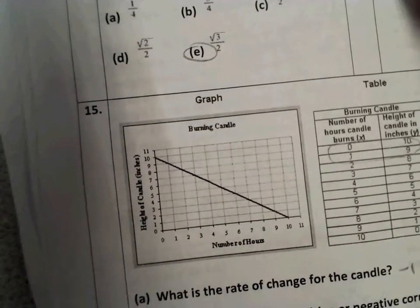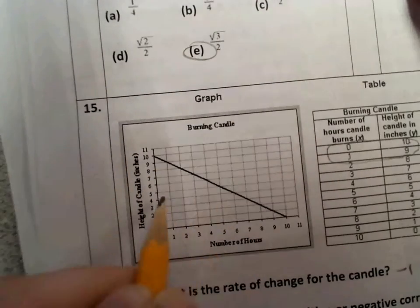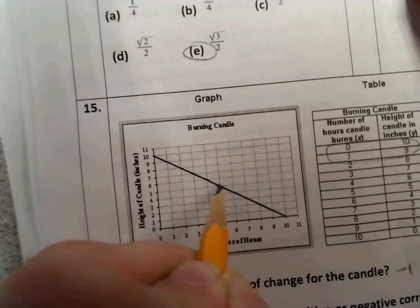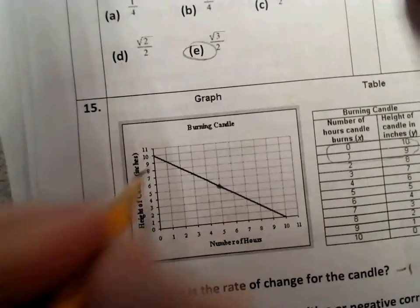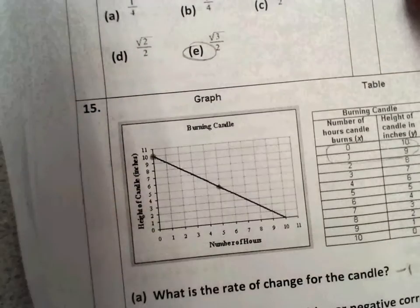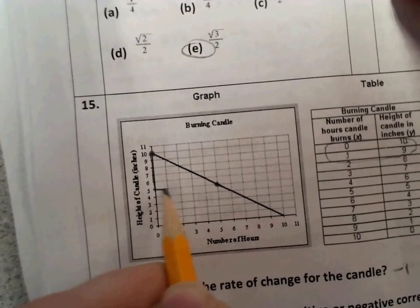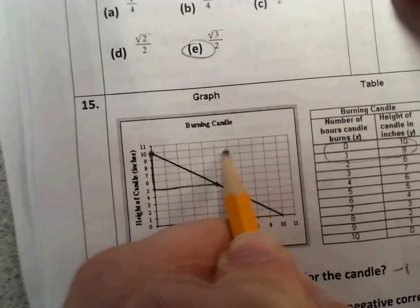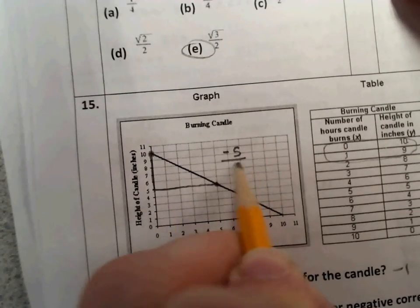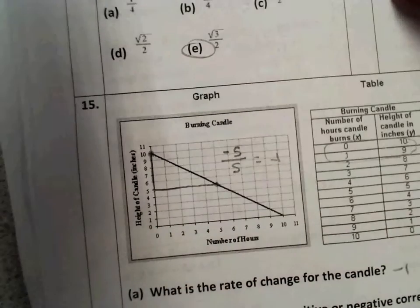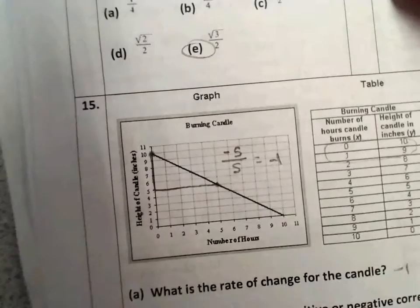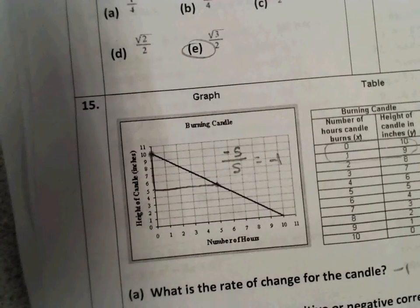You could also look at the graph and do rise over run, and it doesn't even matter. As long as you've got a nice pretty point, it doesn't matter which two you use. I'll just use this one here right in the middle. So my rise would be down 5, and my run would be over 5. So the rise is negative 5, and the run is 5, and I know that that's also negative 1. So a lot of ways you could see that the rate of change for the candle is negative 1.